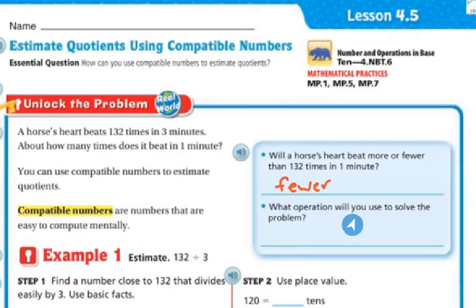What operation will you use to solve the problem? Well, to solve the problem, I'm going to have to divide. I need to divide the 132 into three minutes to find out how many it is for one minute. So I'm going to use division.